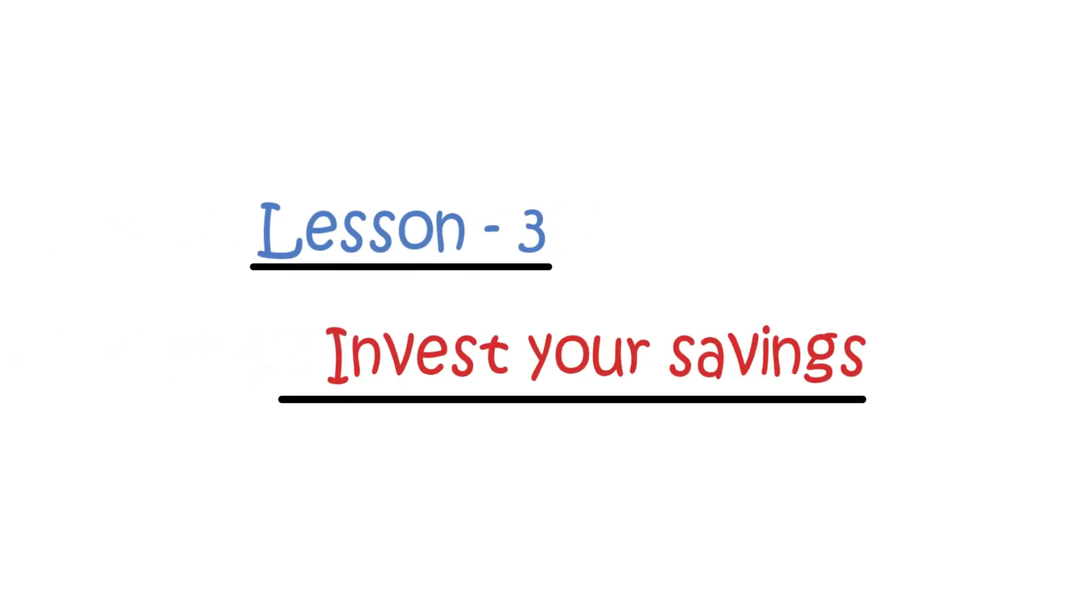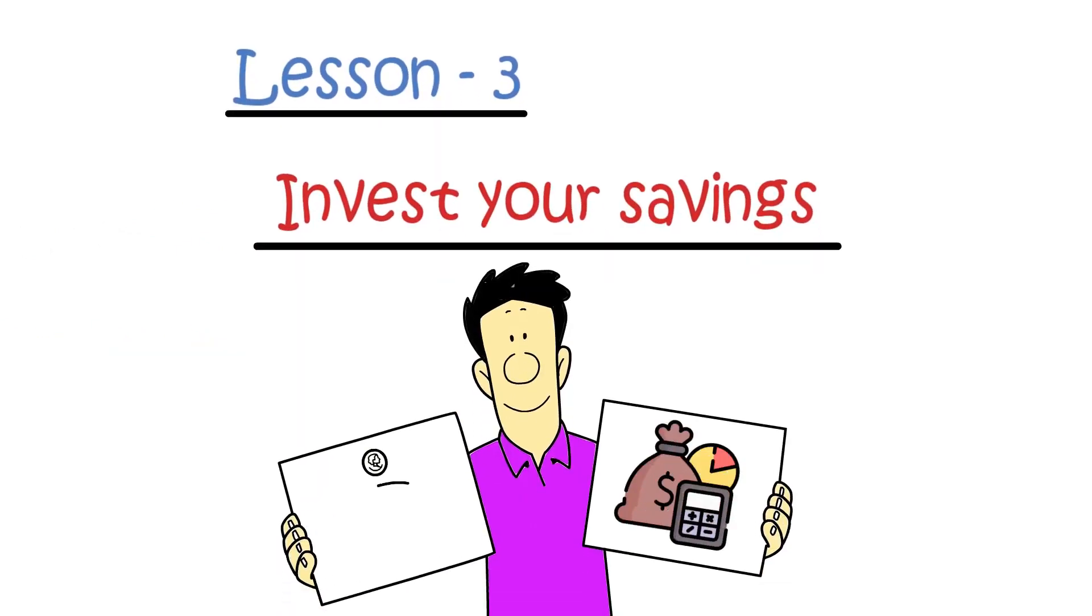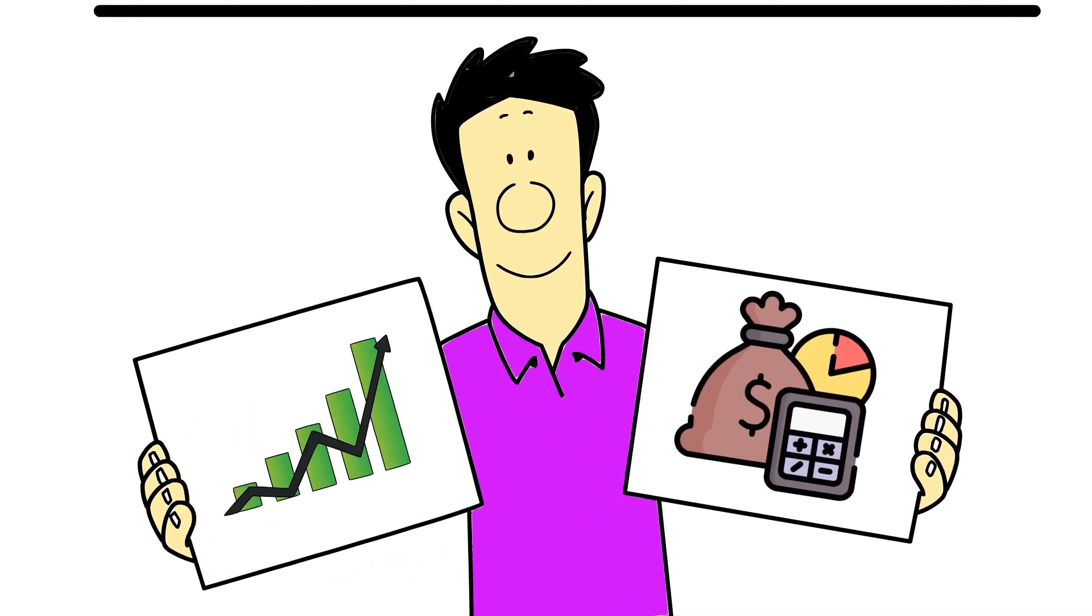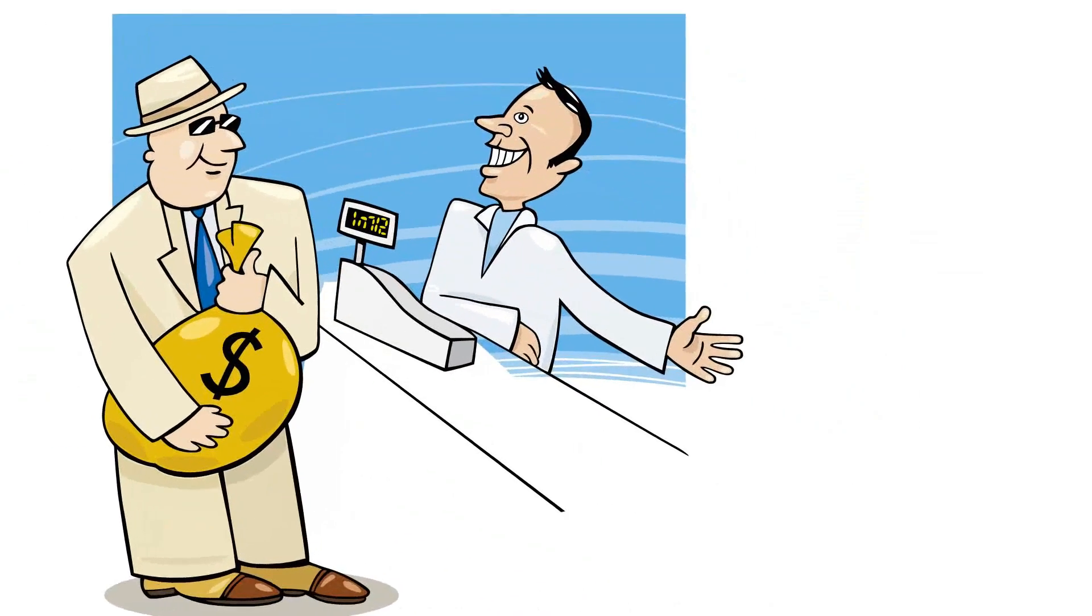Lesson number three, invest your savings. As you're controlling your expenses and saving 10% of your income, you will notice that your savings account will start to grow. Although it's nice to have cash build up, if cash sits in a bank account, it devalues due to inflation.